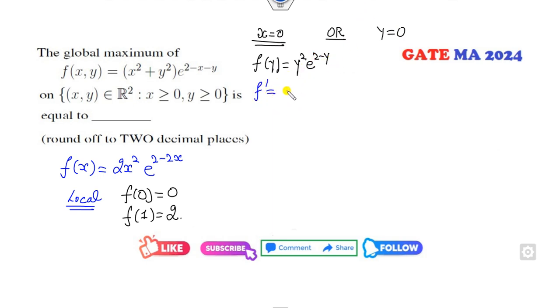Now I can again find this solution. df/dy equals 2y e^(2-y) minus y² e^(2-y). Put this equal to zero. e^(2-y) can never be zero, so 2y minus y² equals zero.